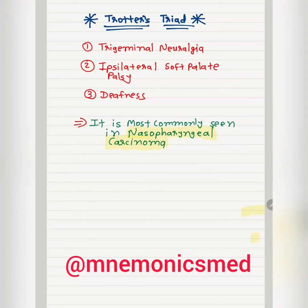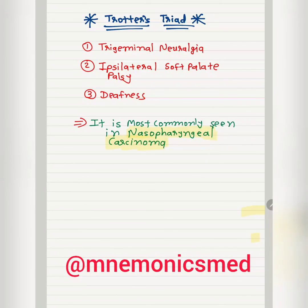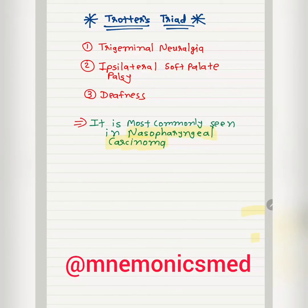Trotter's Triad has three components: trigeminal neuralgia, ipsilateral soft palate palsy, and deafness. It is most commonly seen in nasopharyngeal carcinoma. You have to remember these three things in Trotter's Triad.